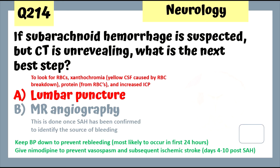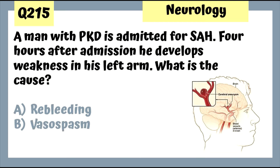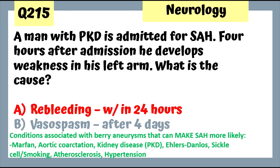Question 215: A man with polycystic kidney disease admitted for subarachnoid hemorrhage develops weakness in his left arm four hours after admission. Since it's four hours later, the problem is re-bleeding — vasospasm occurs days later. Conditions associated with berry aneurysms include polycystic kidney disease, which is therefore associated with SAH.